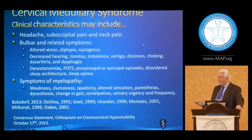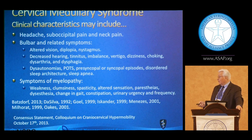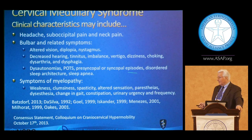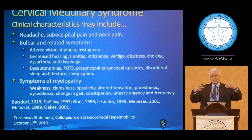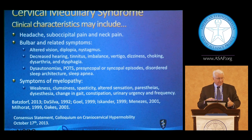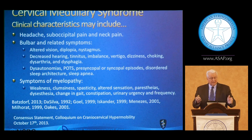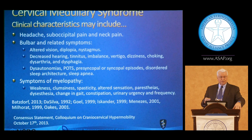Bulbar features and related symptoms — altered vision, diplopia, nystagmus, decreased hearing, tinnitus, imbalance, vertigo, dizziness, choking — are common. The EDS population sneaks in here because they masquerade as a kind of Chiari. They present with tonsillar descent, but the tonsillar descent is not the result of a small box — it's a result of cranial settling and irritation of those structures by instability at the cranial cervical junction. There may be symptoms of myelopathy, but on the neurological exam about 98% of exams in patients are quite normal unless you're looking very carefully for rare and unusual physical features.